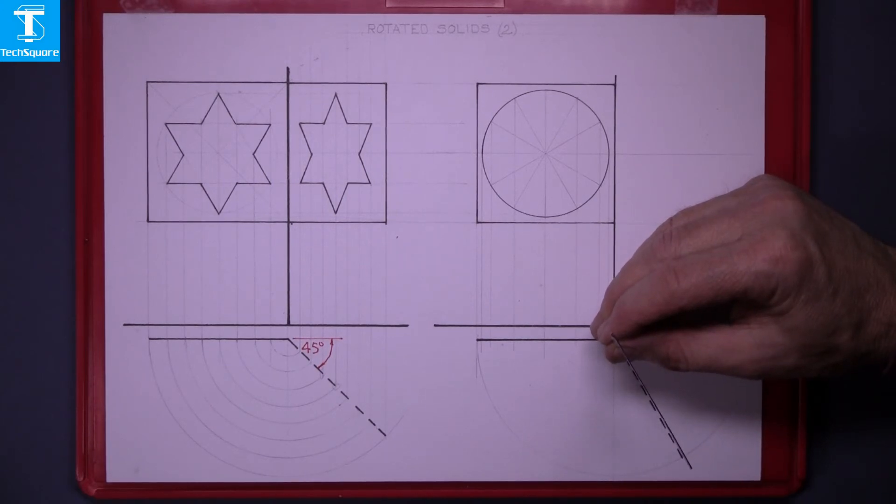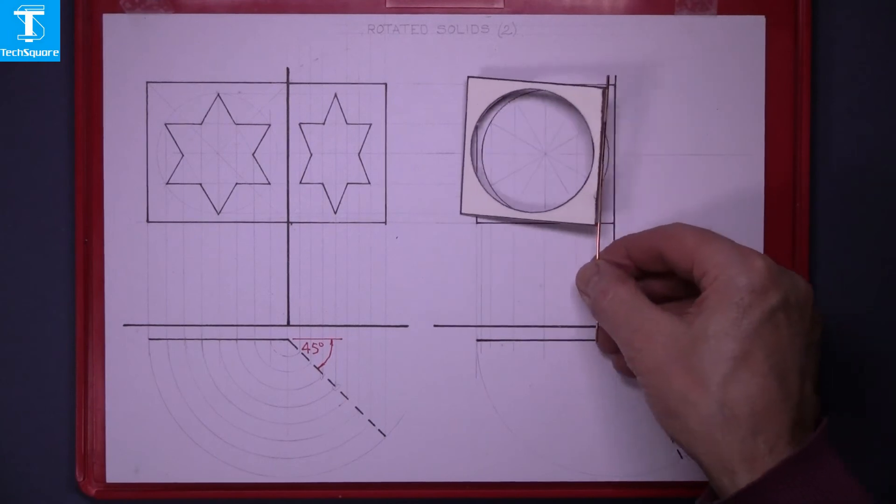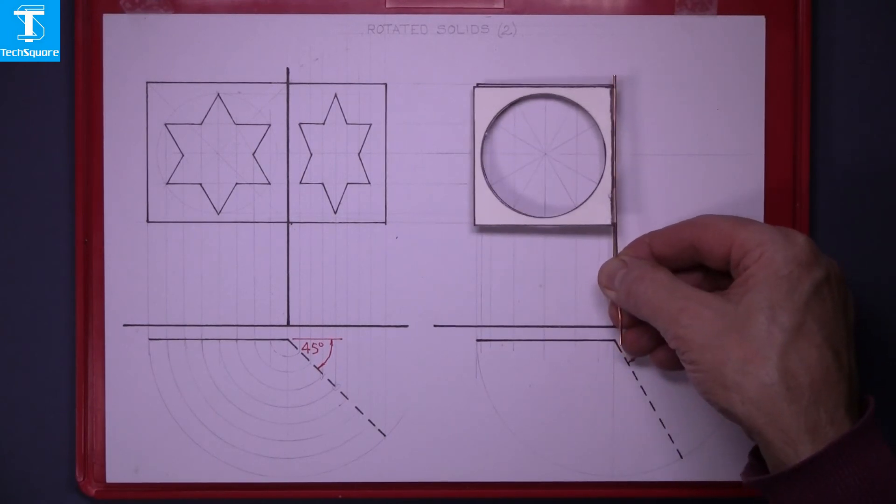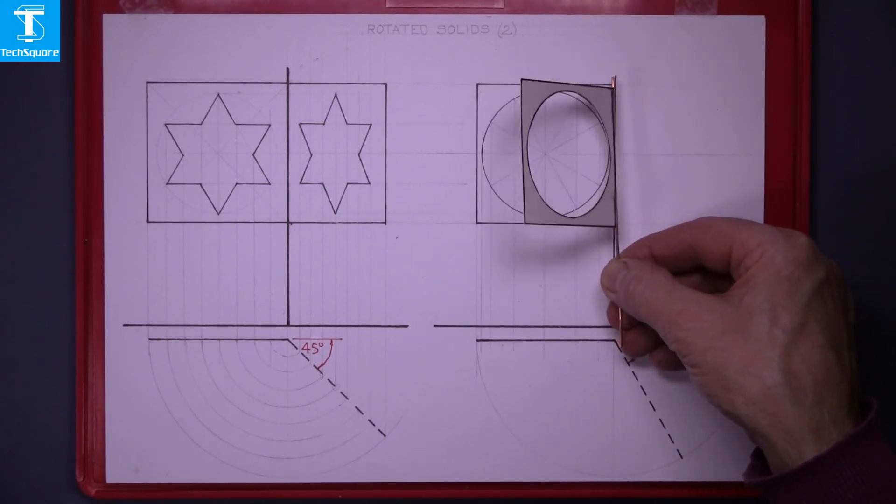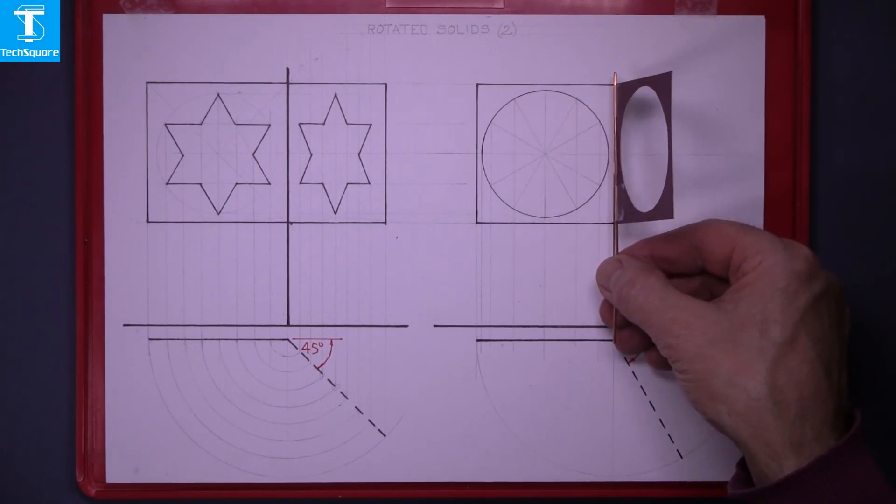And now the elevation of it, the points will move horizontally until you get the position like that, and the circle becomes an ellipse.